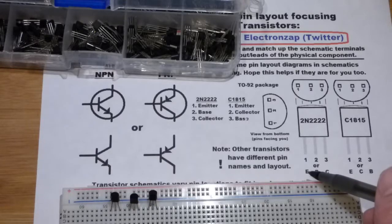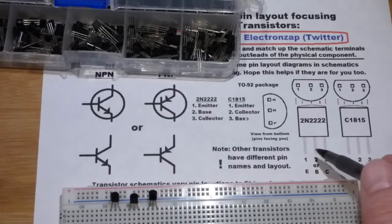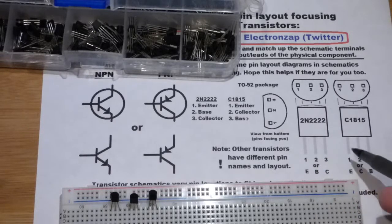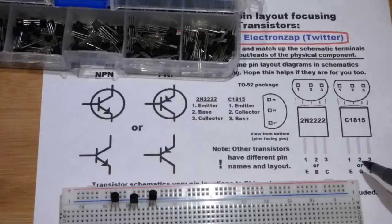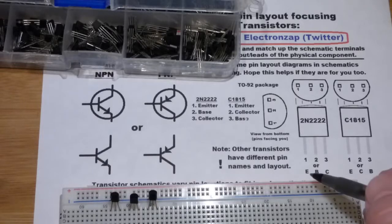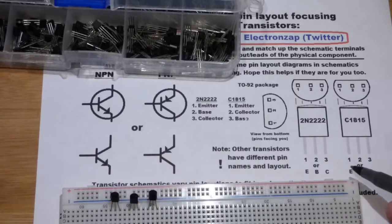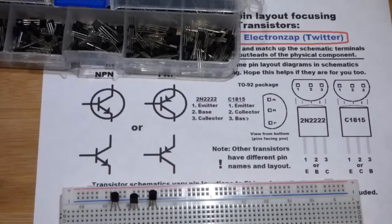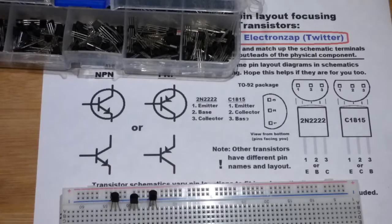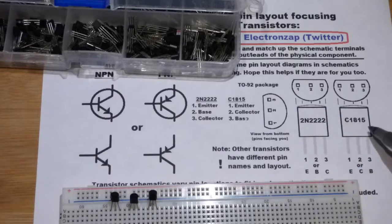Instead of numbers, they may use letters. For the 2N2222, it may say emitter base collector where these three pins are. The C1815, of course, is emitter on the left - the same as a 2N type series. But now, the collector's in the middle and the base is on the right. If it looks like this, it's really easy to tell what it's telling you.